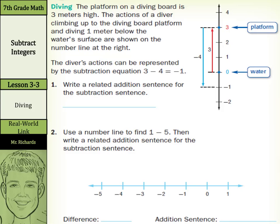If we look at our real-world link of diving, the platform on a diving board is three meters high. The actions of a diver climbing up to the diving board platform and diving one meter below the water surface are shown on the number line. The diver's action can be represented by the subtraction equation three minus four equals negative one.